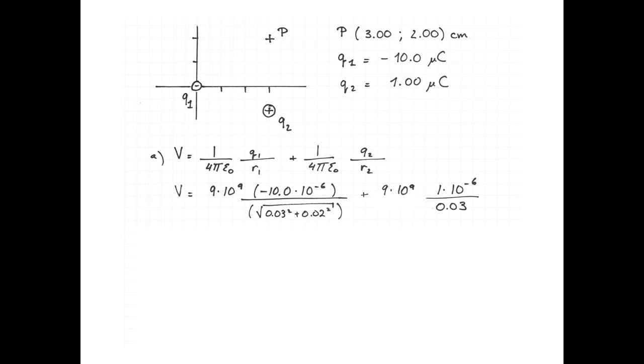The electric potential of Q2 is given by 9 times 10 to the 9, multiplied by the charge 1 microcoulomb and divided by the distance from Q2 to point P. And from Q2 to point P is 3 centimeters, so 0.03.